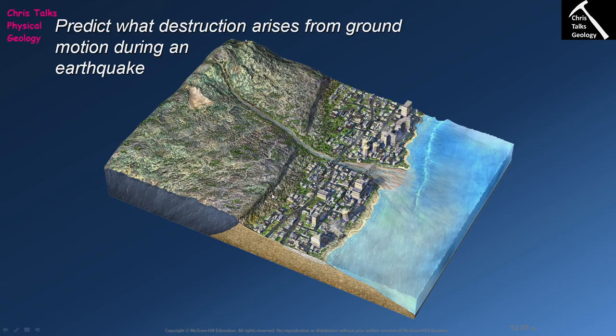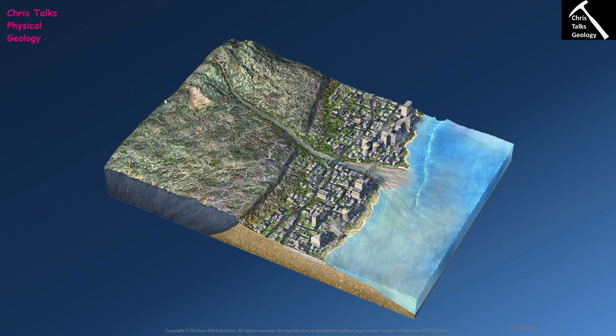Here we have a diagram showing a settlement located along a coastal plain. We have an area of elevated terrain, the coastal plain itself, the coastline, a river coming off the high ground, and an ocean basin.